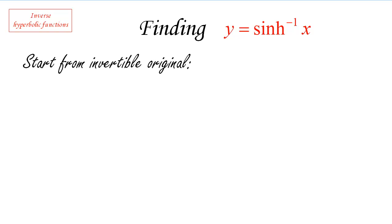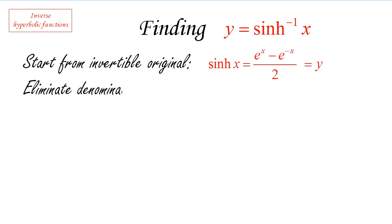We're going to start from the original function. The formula for sinh X is (e^X minus e^(−X)) / 2, and that equals our output variable Y. Now we're going to follow the usual technique for finding the inverse: first solve for X, then switch. We start by eliminating the denominator — a very good general algebra technique when solving equations is to get rid of denominators. All we have to do is move the 2 to the other side.